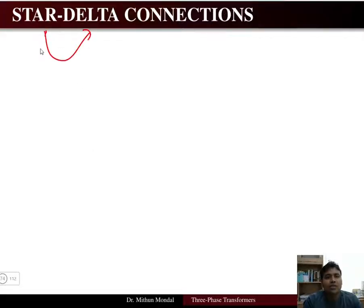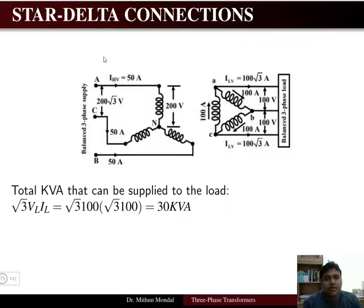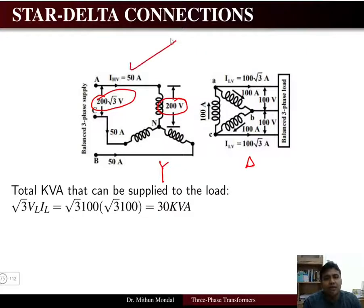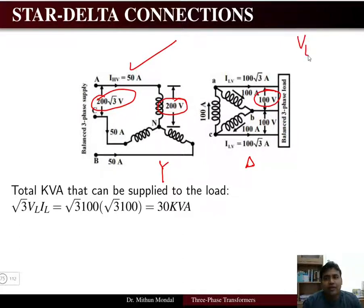The next connection is the star-delta network, where the primary is connected in star and the secondary in delta. Using the same example, the primary remains unchanged: 200 V phase voltage, 200√3 V line voltage, and 50 A primary current. On the low-voltage delta side, the phase voltage is 100 V. In a delta network, line voltage equals phase voltage, so the secondary line voltage is also 100 V.